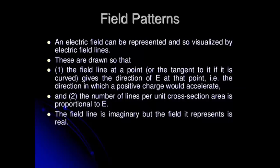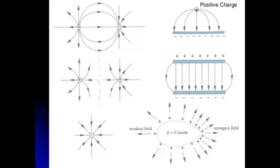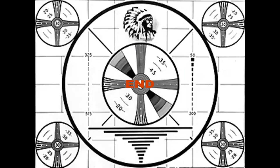Electric field patterns can be represented visually with electric field lines, similar to magnetic field lines. Remember, the movement of charge is from positive to negative. The positive charges always move toward the negative ones.